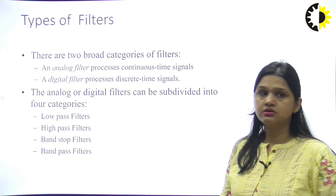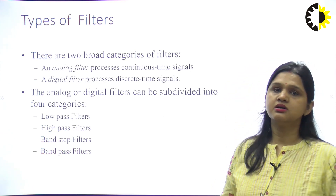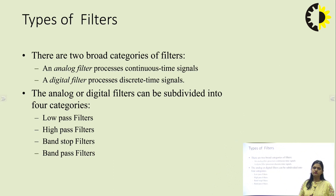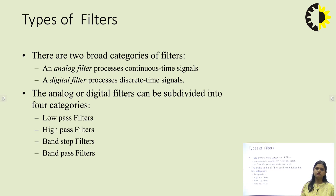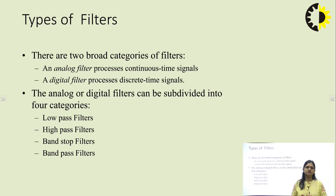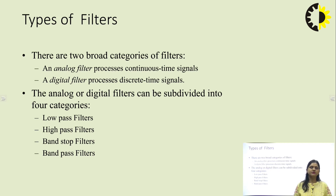Basically, a filter is a circuit by which we can filter out some frequencies. If we use some active device in that circuit, we can also increase the gain. So, an active filter is defined as a circuit by which we can filter a particular band of frequency and also increase the gain along with the frequency selection.